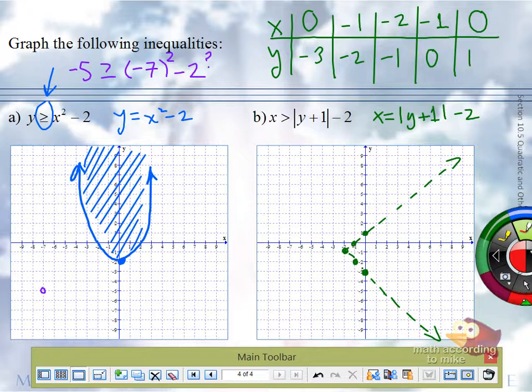So just like before, pick a point, any point, as long as it's clearly not on, in this case, the absolute value graph. Negative 4, negative 4, that works for me, that's down here. If I put a negative 4 in for x, and also negative 4 in for y, is that true or false?